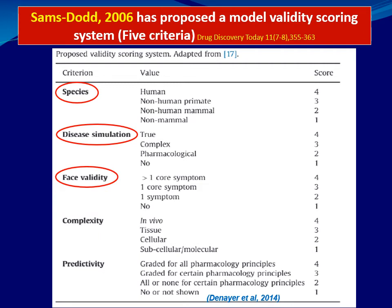The third criterion is face validity: having two or more core symptoms per ICD-11 or DSM-5 scores four, while one core symptom scores three. The fourth criterion is complexity: in vivo models score higher (four) than in vitro or ex vivo (score two or three), as in vivo is more complex and realistic. The fifth criterion is predictivity: graded dose-response across all pharmacological agents scores highest; all-or-none quantal response scores two.